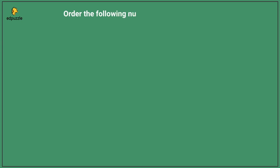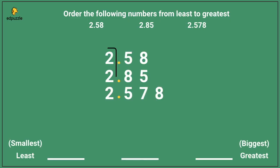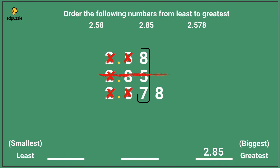Let's do one more. Let's order the following numbers from least to greatest: 2.58, 2.85, and 2.578. After stacking the numbers, we see all the 2s are the same, so we cross those out and look to the next place value. 8 is the largest digit, so 2.85 must be the largest number. Next, we look at the next place value — 7 is smaller than 8, so 2.578 is smaller than 2.58. So the correct order from least to greatest is 2.578, 2.58, then 2.85.